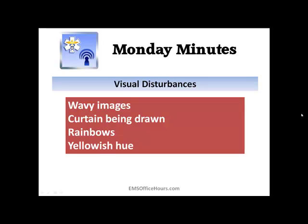Other visual disturbances to consider: are the images the patient is looking at wavy in appearance? That could be from a migraine. Do they feel like a curtain is being drawn over what they're looking at? That could indicate a detached retina. Are they seeing rainbows or halos? That could be glaucoma. Is everything looking yellowish — a yellowish hue? That could indicate digitalis toxicity. If the patient has a history of migraines or has taken a digitalis medication, that can help you figure out what's going on, or help you document what to pass on to the emergency department.